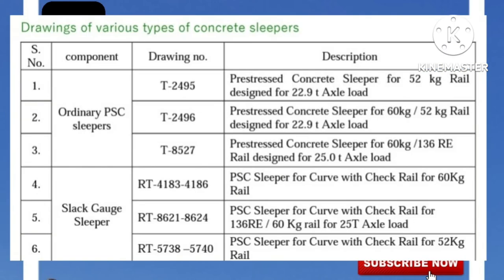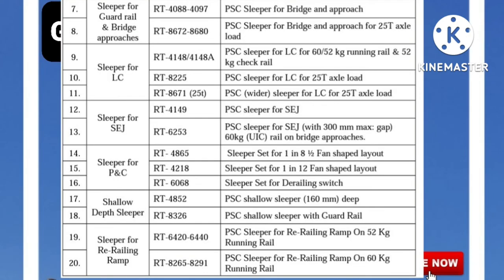Drawing numbers of various types of concrete sleepers: Ordinary PSC Sleeper — T2495, T2496, T8527. For other types including sleepers for rear rail and bridge approaches, level crossings, SCJ, points and crossings, and rail-level ramp, please refer the table for drawing numbers and full details.